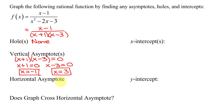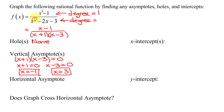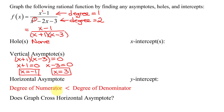Next, let's look for horizontal asymptotes. That depends on the degree of the numerator and the degree of the denominator. Looking at my numerator, the highest exponent on any x is 1, so the degree is 1. The denominator has a highest exponent of 2, so the degree is 2. Since the degree of the numerator is less than the degree of the denominator, that always gives a horizontal asymptote with equation y equals 0.